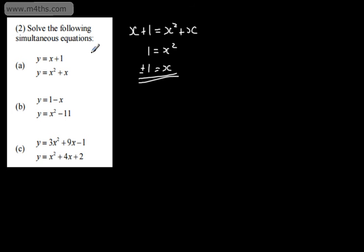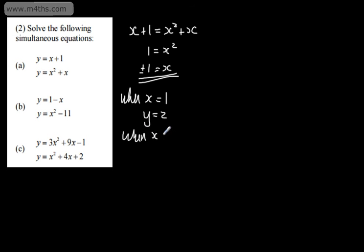We now need to solve for y. When x is equal to positive 1, substituting back into the linear equation, which is significantly easier, we get y is equal to 2. When x is equal to negative 1, substituting back into the linear equation gives us y is equal to negative 1 plus 1, which is 0. So I've solved the simultaneous equations to get two sets of coordinates.